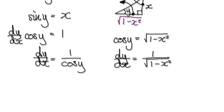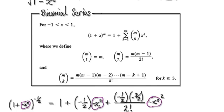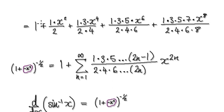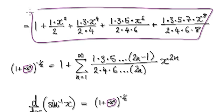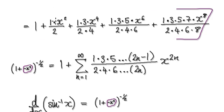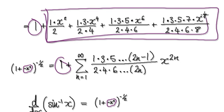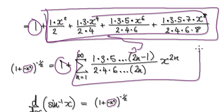Following on from the previous two videos, we got to this stage here. So now it's just a matter of putting this into summation form. You've got your 1 here, you've got your 1 here, put the rest in summation form, and that will then take us to here.